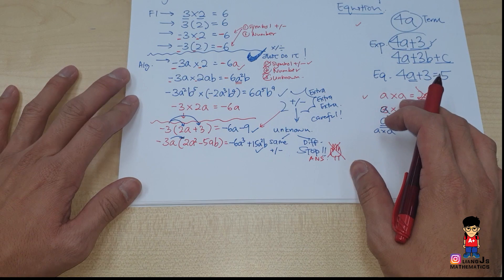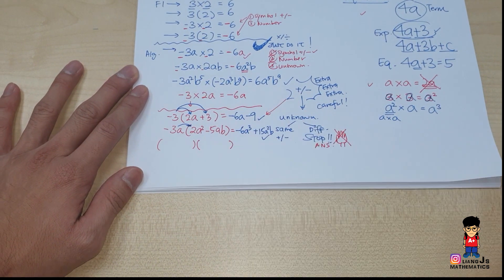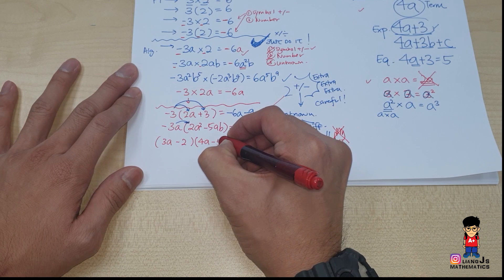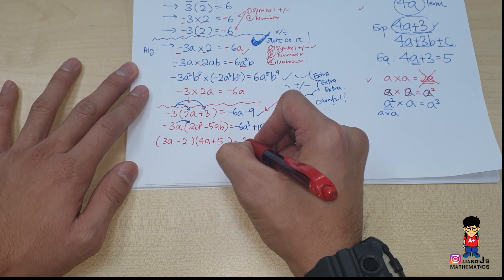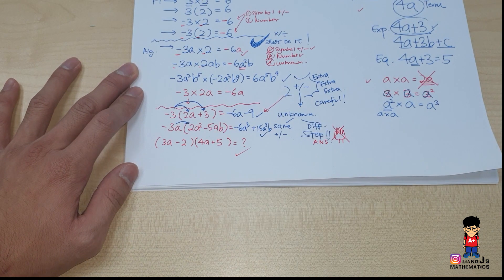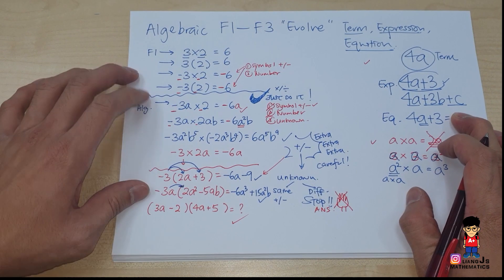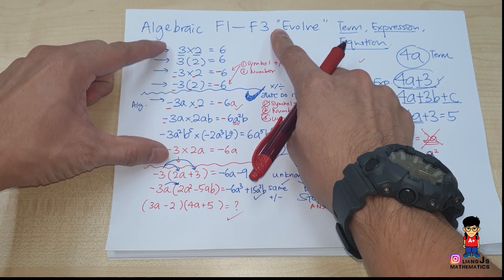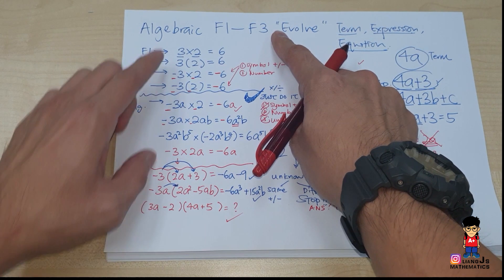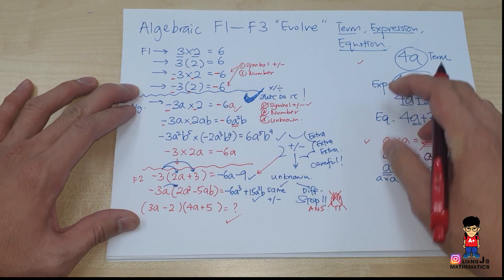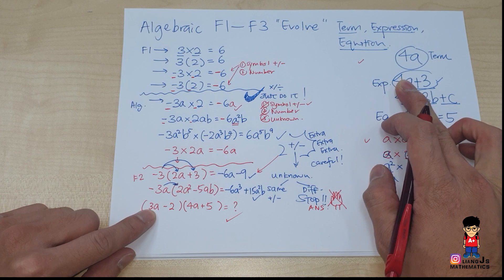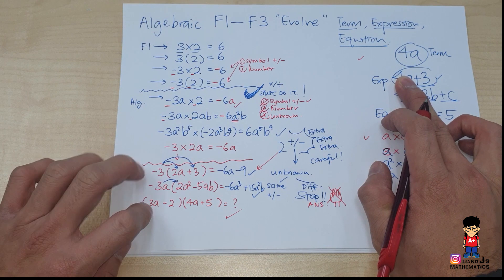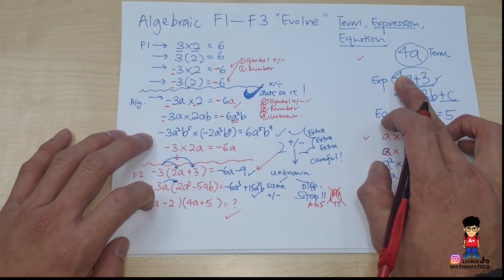The hardest level in Form 2 involves bracket times bracket — for example, 3a minus 2 times 4a plus 5. In the next video I'll talk about this part specifically. The important point is seeing how Form 1 algebra slowly evolves into Form 3 level. This progression goes from simple multiplication all the way to bracket expansion. I'll show both the normal method and the faster ADMATS method in the next video, so stay tuned.